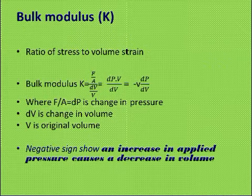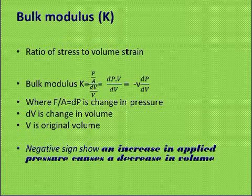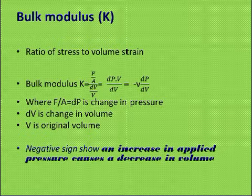Bulk modulus is denoted by K, and it is the ratio of stress to volume strain. Bulk means volume related, hence stress to volume strain. Bulk modulus K is equal to F upon A — the stress is nothing but force upon area — and the volume strain is the change in volume DV to the original volume capital V.